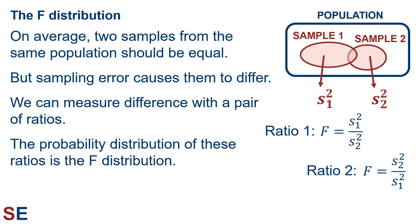To perform our test, we're going to use the F-distribution. On average, the variances of two samples from the same population, or a sample from each of two different populations with the same variance, should be equal. Sampling error causes them to differ even if the population variances are the same. We'll measure that difference with a ratio of the sample variances and compare that to a probability distribution.